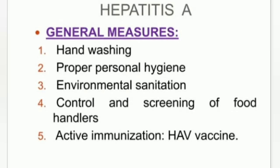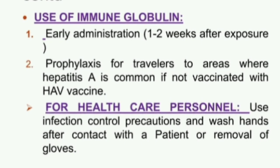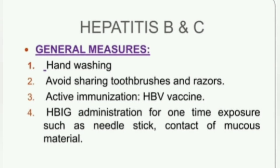Prevention measures for Hepatitis A include general measures such as handwashing, proper personal hygiene, and environmental sanitation. Control and screening of food handlers, active immunization, and use of immunoglobulin with early administration one to two weeks after exposure are recommended. For travel to areas where Hepatitis A is common, vaccine is advised. For healthcare personnel, use infection control precautions, wash hands after contact with patients, and use gloves.